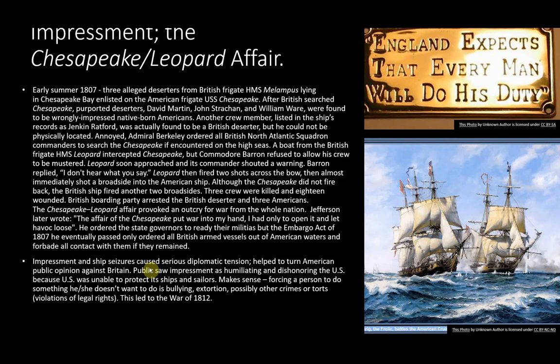In the early summer of 1807, three alleged deserters from the British frigate HMS Malampus lying in Chesapeake Bay enlisted on the American frigate USS Chesapeake. After the British searched the Chesapeake, the purported deserters David Martin, John Strachan, and William Ware were found to be wrongly impressed native-born Americans. However, another crew member listed as Jenkins Ratford was actually found to be a British deserter, but he could not be physically located.